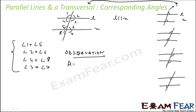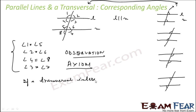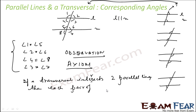Since this is done using observation, there is no proof for this, so I'll write axiom — not theorem. The axiom states: if a transversal intersects two parallel lines, then each pair of corresponding angles is equal. This is called the Corresponding Angle Axiom.